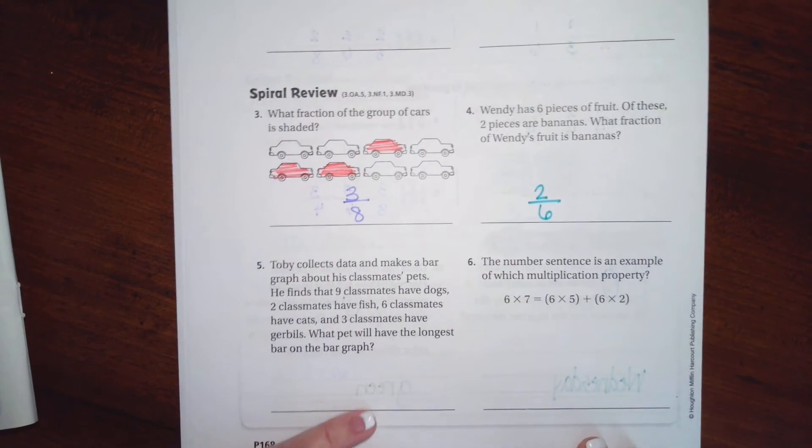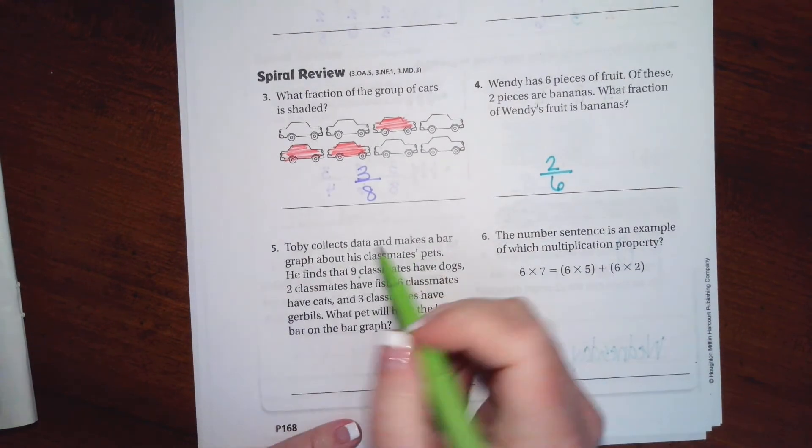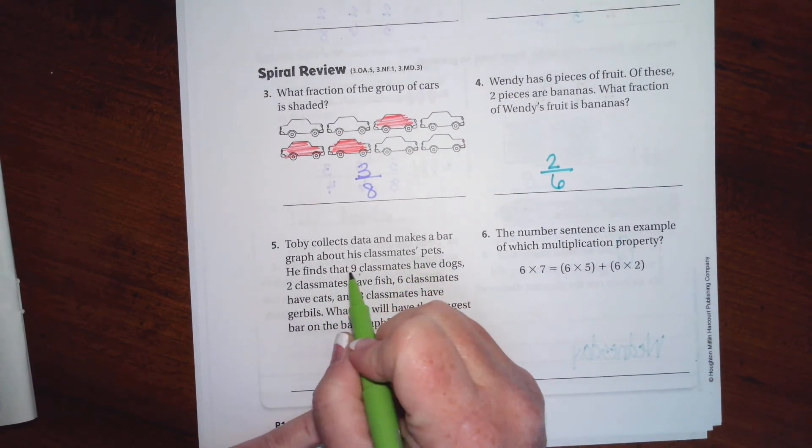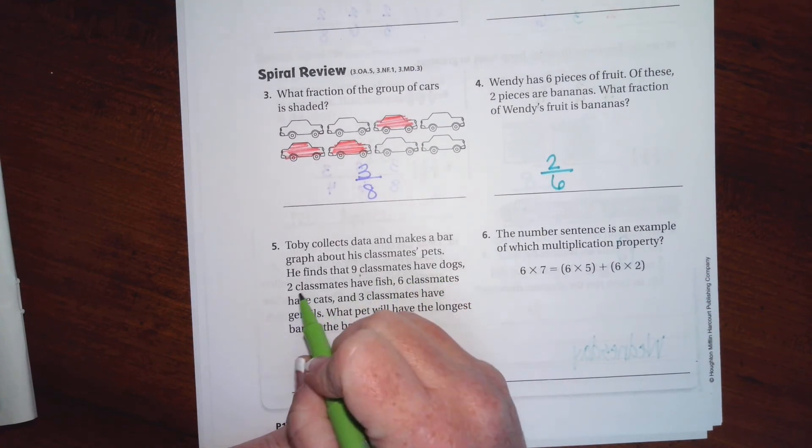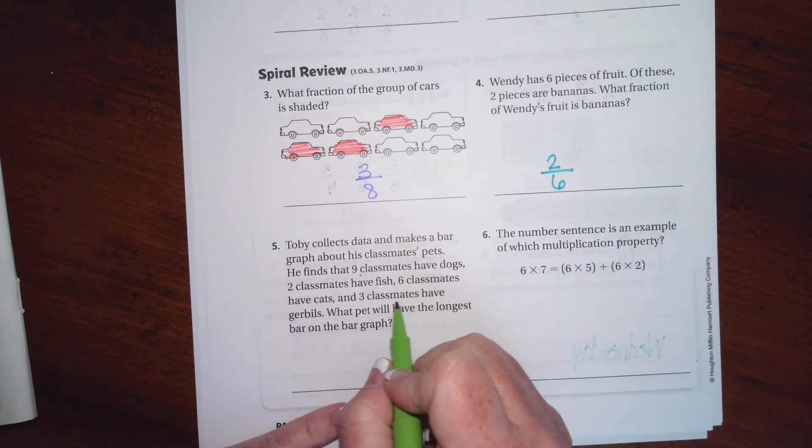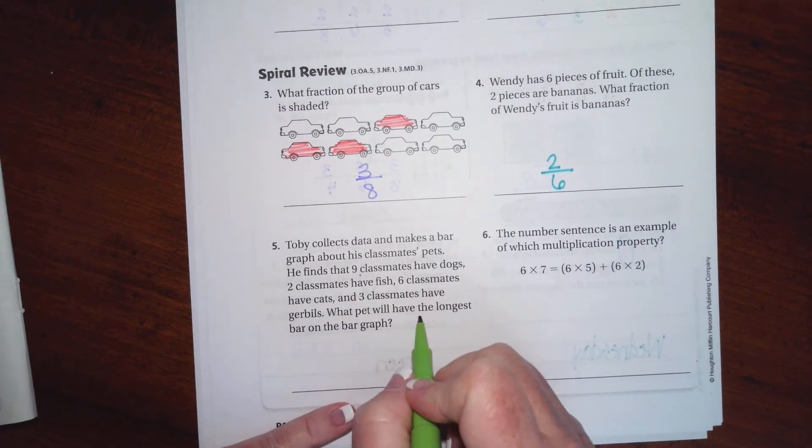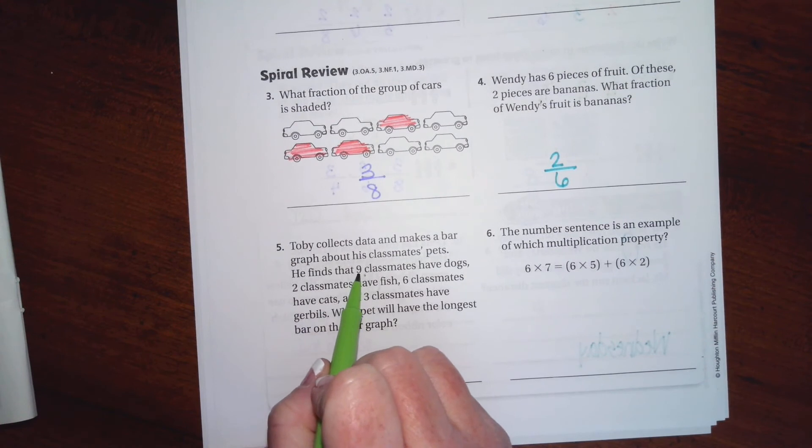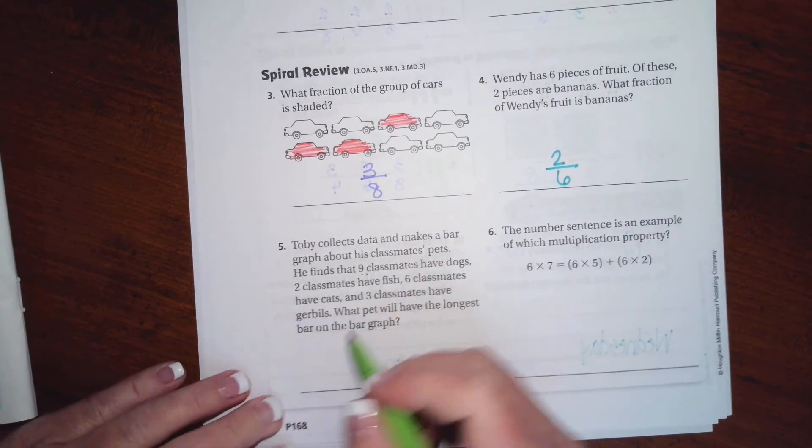Toby collects data and makes a bar graph about his classmates' pets. He finds that nine classmates have dogs, two classmates have fish, six classmates have cats, and three classmates have gerbils. What pet will have the longest bar on the graph, or which one has the most? So the highest number is nine. That's going to be dogs.